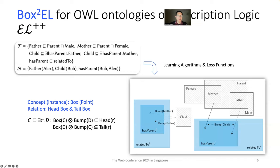Each concept is also represented by a bump vector to indicate its impact on another concept. In existential quantification, the box of concept C after the impact of concept D should still lie within the head box of relation R.